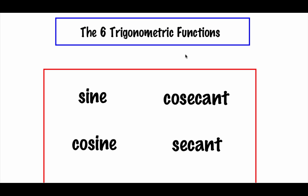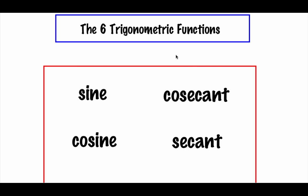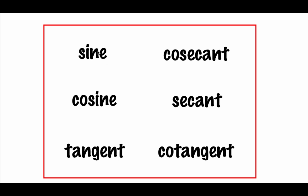There are six trig functions we're going to focus on. You're probably most familiar with the ones in the left-hand column: sine, cosine, and tangent. There are abbreviations for each — sine is S-I-N, cosine is C-O-S, and tangent is just tan.